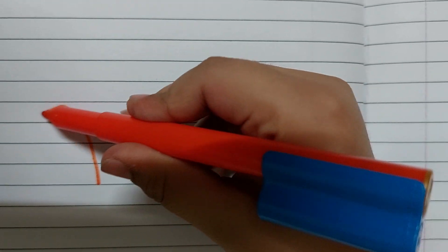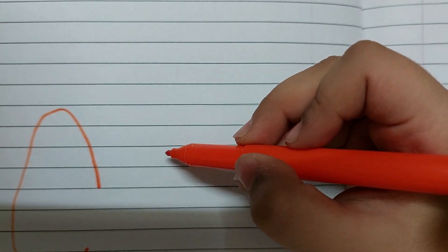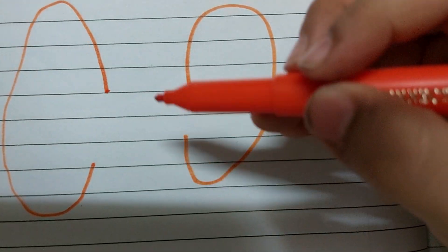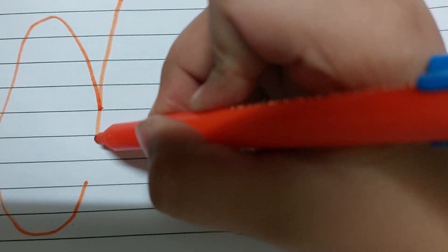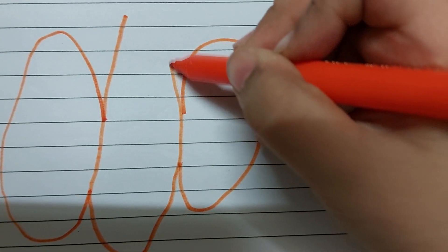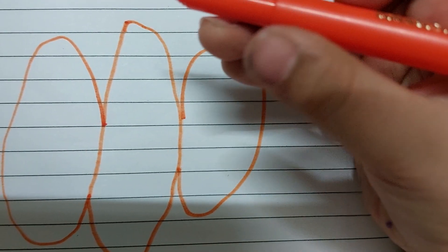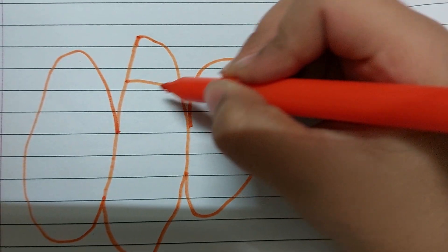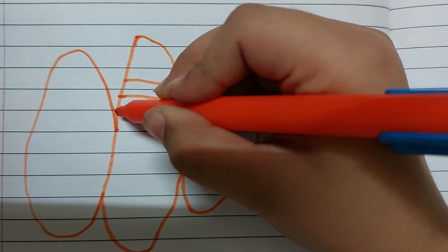To make it easily, first draw a ring like this, then another ring like this. Make an oval in between like this, and make a line like this in the middle.